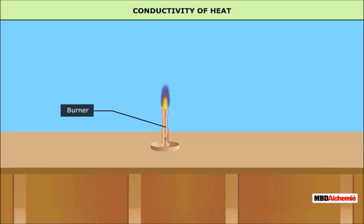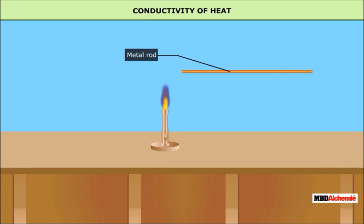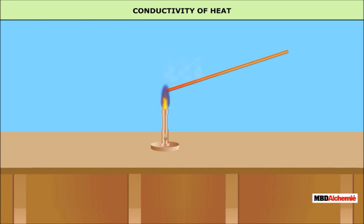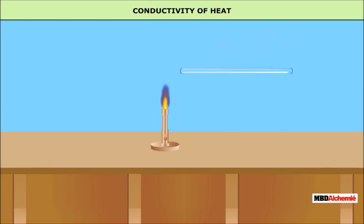Conductivity of Heat. When you heat one end of a metal rod, after some time you will observe that the other end becomes hot, whereas the other end of a glass rod does not become hot. It proves that metal rods are good conductors of heat and a glass rod is a bad conductor of heat.